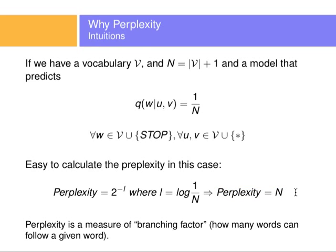Because this log is in base two, 2 to the negative logarithm base two of 1 over n will give you a perplexity of n. This means that there are n words that can come after on average. For every bigram, there's n number of possibilities that can come after those two words. It's kind of like a branching factor.